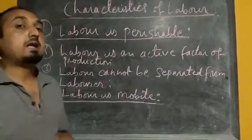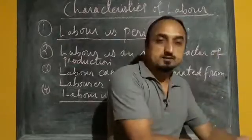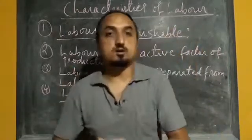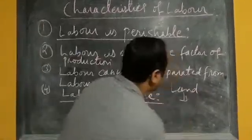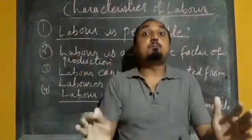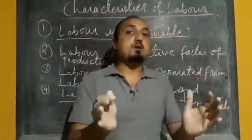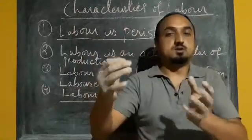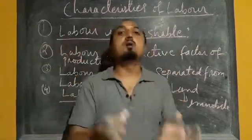Another important characteristic of labour is that labour is mobile. Mobile means the labour can be easily shifted from one place to another place, or we can move labour from one occupation to another. But that is not possible in the case of land. Land is an immobile factor of production. The land of one place cannot be shifted to another. But labourers from one place can be easily moved or shifted to another. So we can see that labour is a mobile factor of production, whereas land is an immobile factor of production.